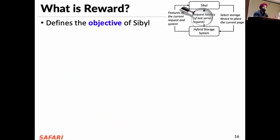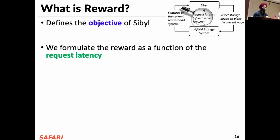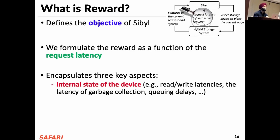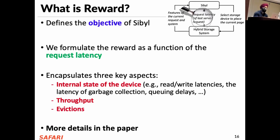The reward is the objective of Sybil. Though Sybil can learn from any sort of reward, in this paper we formulate the reward as a function of request latency. This reward encapsulates three important aspects: first, the internal state of the device — for example, read-write latency, whether there is garbage collection or queuing delays; and also throughput and the amount of evictions happening from the slow device. We provide more details on each of these aspects in the paper.